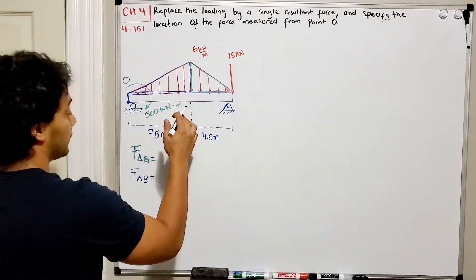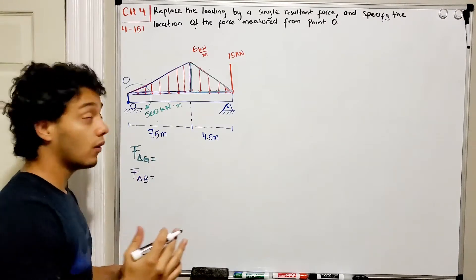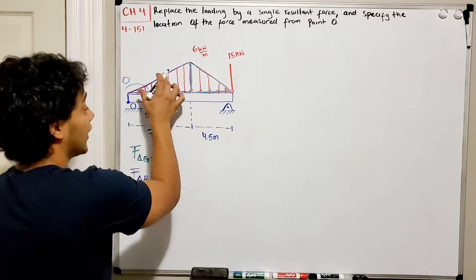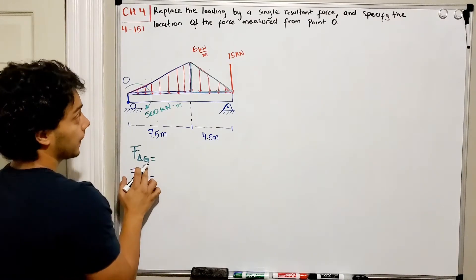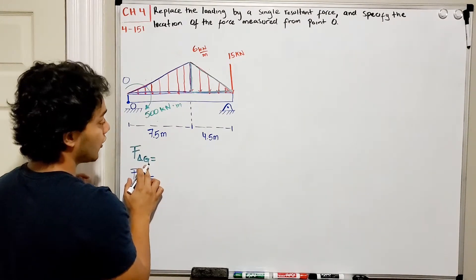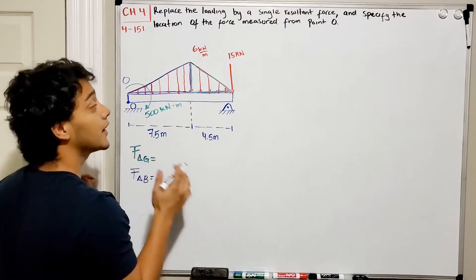What do we know about the distribution load? How do I make them into a single force? I need to find the area of this triangle.